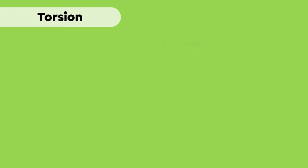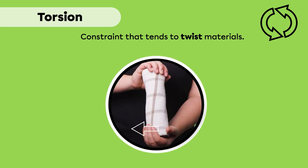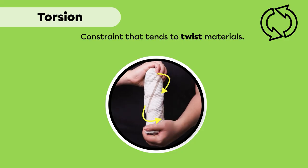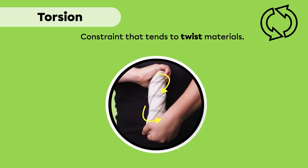Torsion is a constraint that tends to twist materials. One or two parallel forces are applied to an object so that it rotates around an axis. Torsion is represented by this symbol. This constraint is present when wringing a towel: a force is applied to one end and a parallel force in the opposite direction at the other end, so both ends make rotational movements in opposite directions.